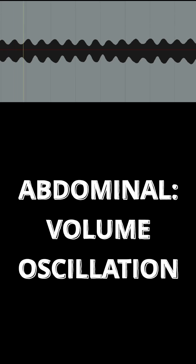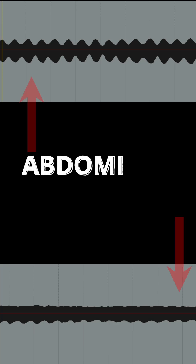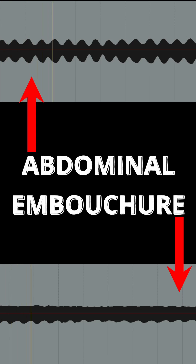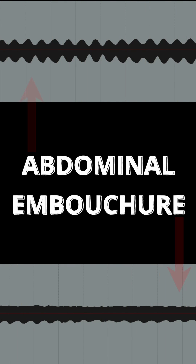These two graphs represent the change in volume during both vibratos. First, abdominal vibrato. Second, embouchure vibrato. And side by side. Notice that the abdominal vibrato fluctuates in volume more than the embouchure vibrato.